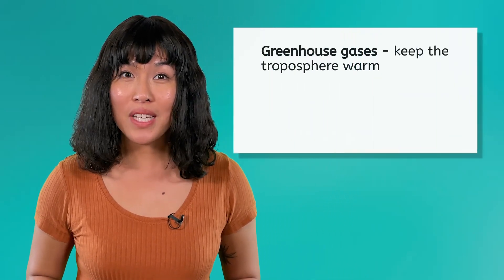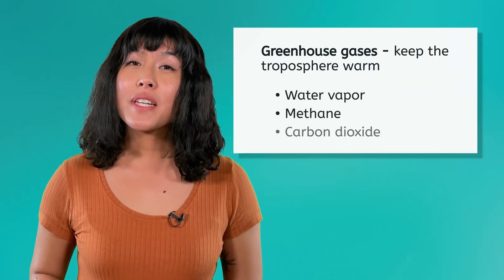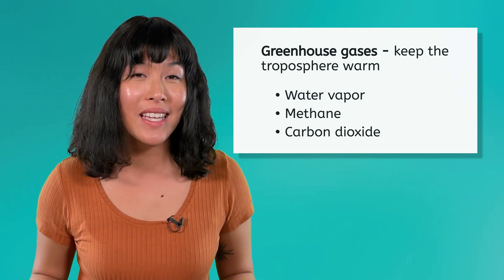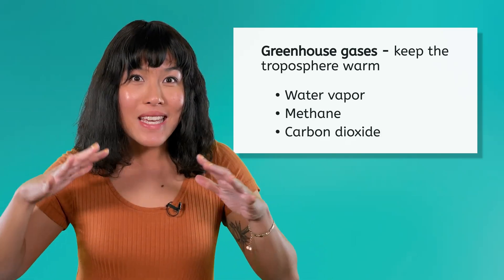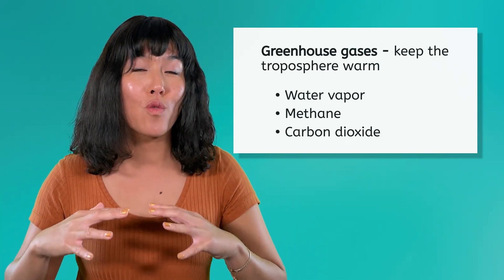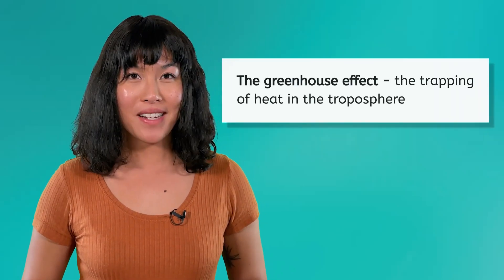Earlier in this unit, we learned about greenhouse gases in the atmosphere. Greenhouse gases like water vapor, methane, and carbon dioxide act like a blanket, trapping heat and keeping the troposphere warm enough for life. This is called the greenhouse effect.